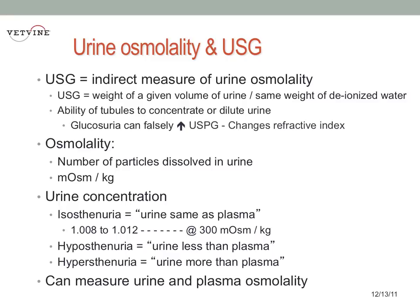Water is freely filtered at the glomerulus, and then the tubules reabsorb it throughout the entire length of the tubules. What we use to determine how concentrated a urine sample is, is we measure the urine-specific gravity by a refractometer, which is an indirect measure of the urine osmolality.